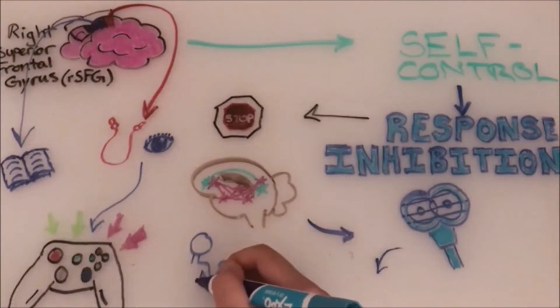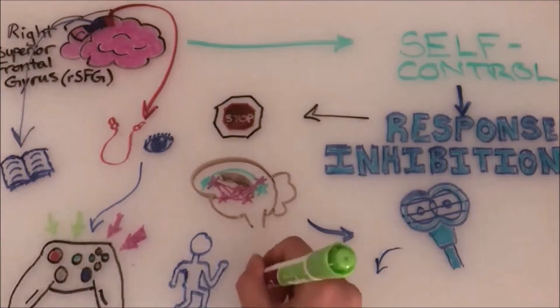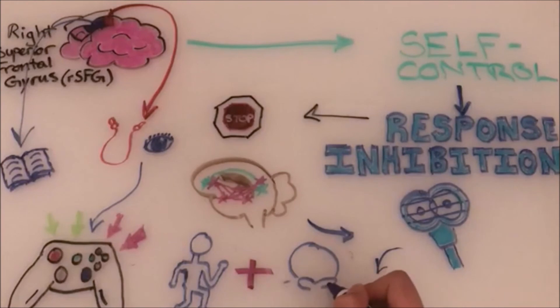Essentially, we think the RSFG is a patch of the brain helping you move and think past your impulses.